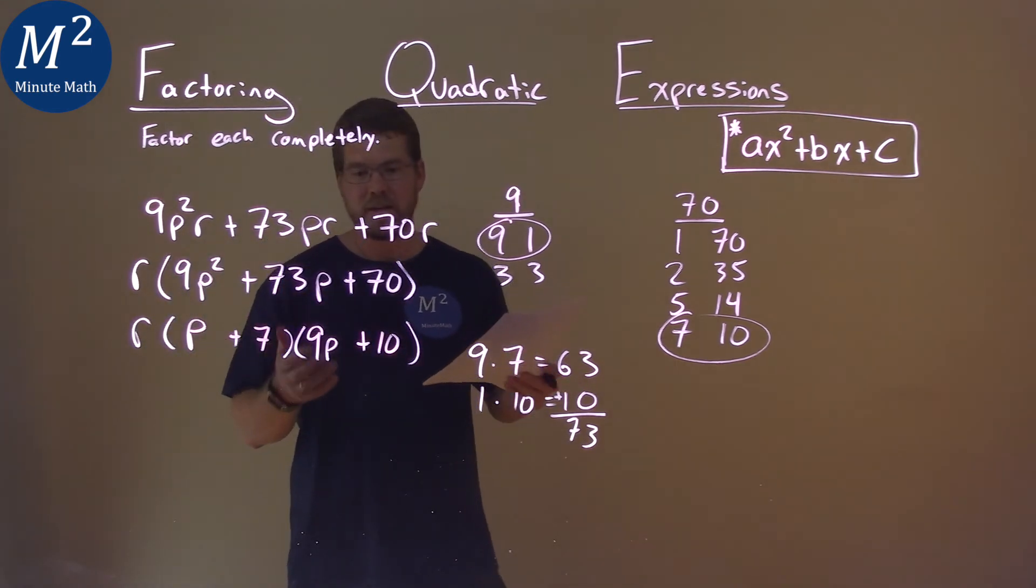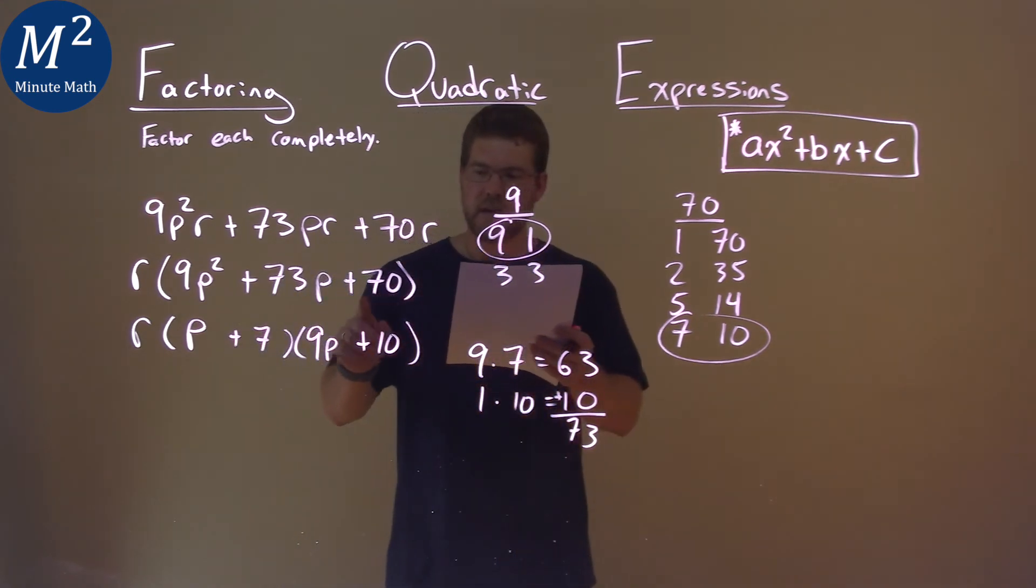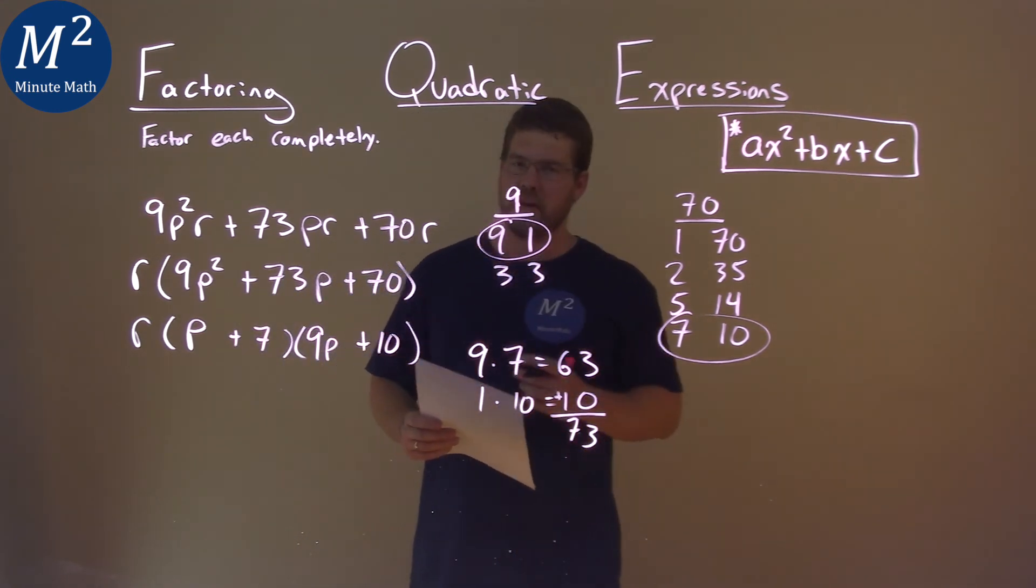That's it. We have our answer in factored form: r(p + 7)(9p + 10). That's our final answer.